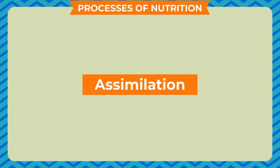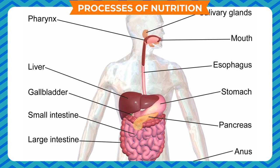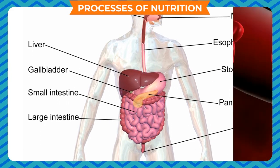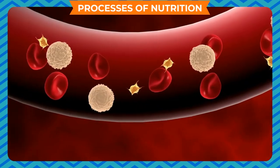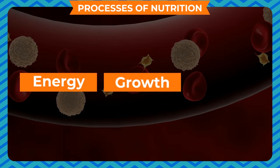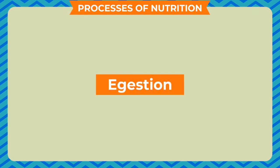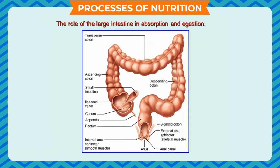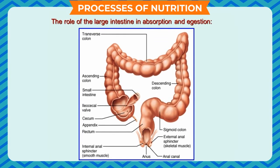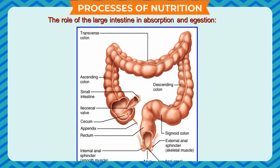Assimilation: It is the process of transportation of absorbed food by the blood streams to body cells, where it is used for energy, growth and repair. Egestion: The process of removal of waste or undigested food out of the digestive system.